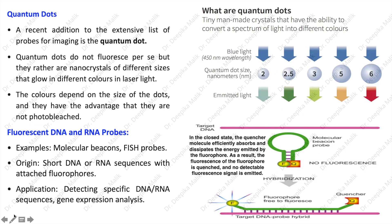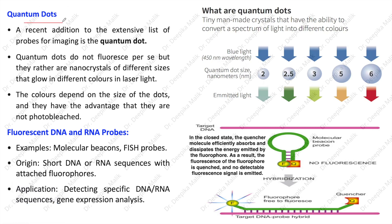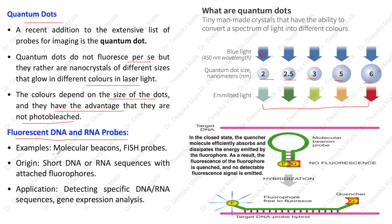A recent addition to the list of probes for imaging is the quantum dot. Quantum dots do not fluoresce by themselves, but rather are nanocrystals of different sizes that glow in different colors under laser light. The colors depend on the size of the dots, and they have the advantage that they are not photobleached. As shown in the diagram, quantum dots of different sizes absorb blue light and emit light of different colors.